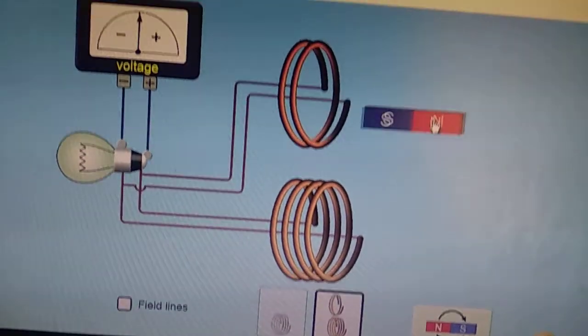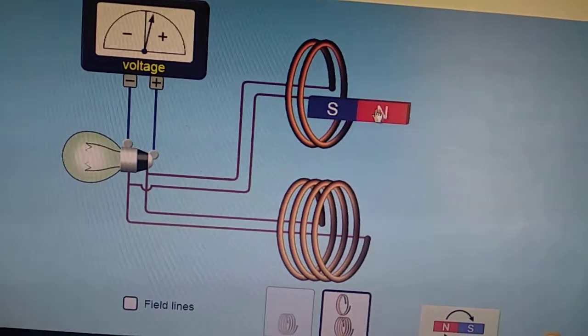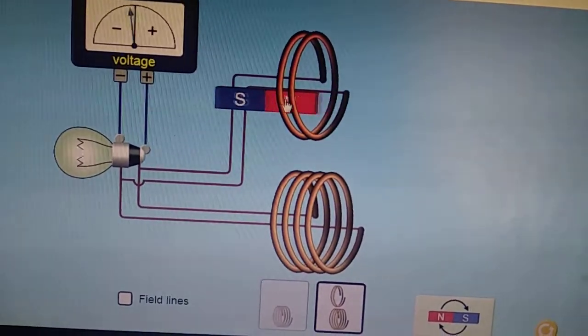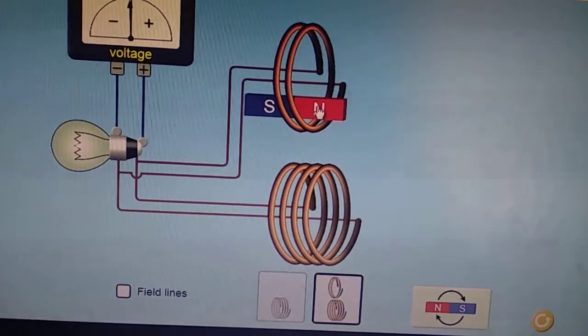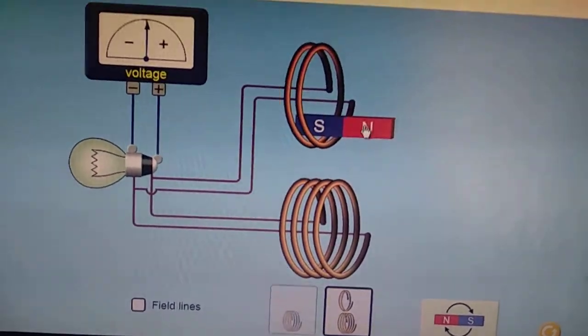Now, if we move the same magnet towards the coil having fewer number of turns, you can see the voltmeter reading, the induced EMF is less as well as intensity is less.